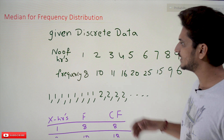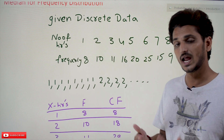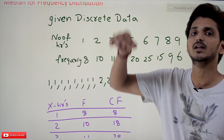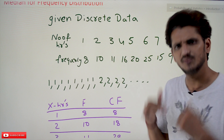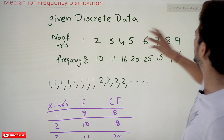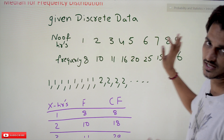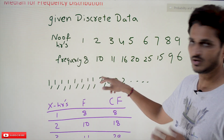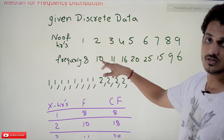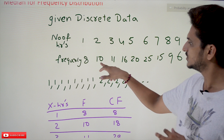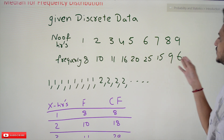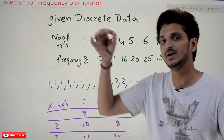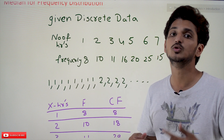We need to identify the median value for this distribution. Median means: arrange the data in ascending order and pick the middle one. The data is already in ascending order. But with 120 students total, it's not possible to write all 120 values and pick the middle one. That's why we use the cumulative frequency method to find the middle value.